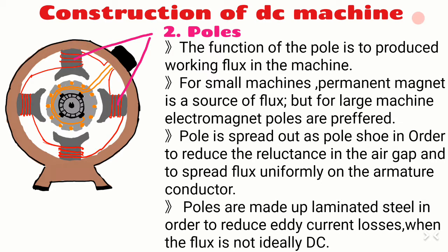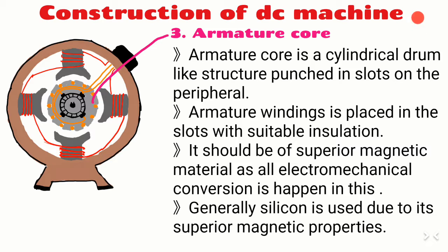The armature core is a cylindrical drum-like structure punched with slots on the peripheral. The armature winding is placed in the slots with suitable insulation. It should be of superior magnetic material, as all the electromechanical energy conversion happens in this rotating part. Silicon steel is used as it has superior magnetic properties. Due to high conductivity, solid cores would produce eddy currents, so they are not preferred; instead, cores with thin laminations of 0.4 to 1 mm thickness are used. 3.5 to 4% silicon is added to steel, which reduces iron losses in the core.